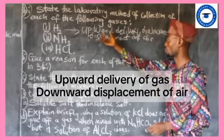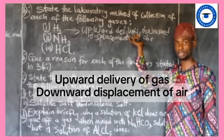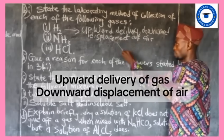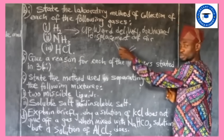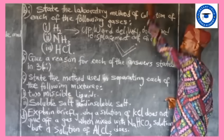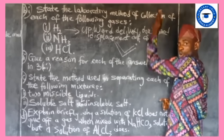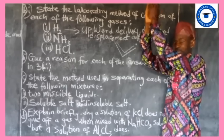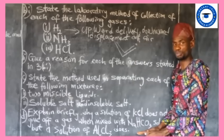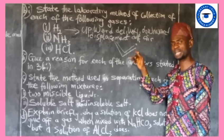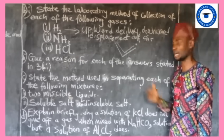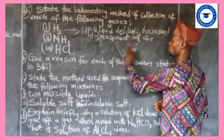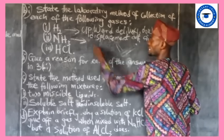We normally collect gases that are less dense than air using upward delivery of gas. The delivery tube directs the gas upward, so as the gas goes upward, the air is displaced downward — that is why we say upward delivery of gas, downward displacement of air.